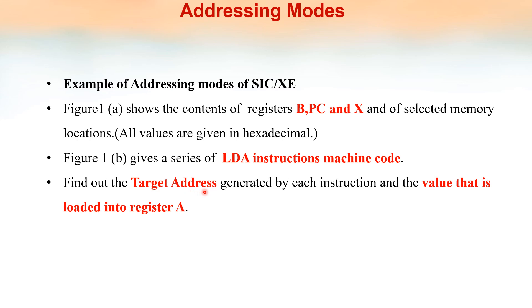Here we have to find out the target address generated by each instruction and the value that is loaded into the register. What is meant by target address? We are having an instruction — for example, an opcode and an operand. For LDA M, the target address is the operand address — where the operand resides in memory. From that target address, we fetch the operand, and the LDA instruction loads that operand value into the accumulator. So here in the problem, we have to find out the target address and the value that is loaded into register A — two things.